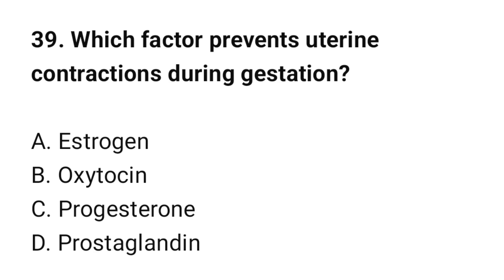Question number 39. Which factor prevents uterine contractions during gestation? The correct option is C: progesterone.